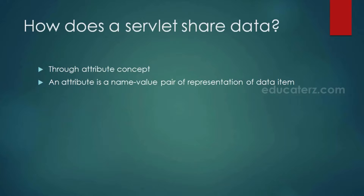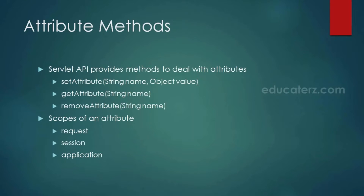An attribute is a name-value pair representation of a data item. The servlet API provides methods to deal with attributes: setAttribute is used to store a data item in a given scope; getAttribute retrieves the stored data item by name and returns null if no attribute exists; and removeAttribute is used to remove a data item. The scope of an attribute can be either request, session, or application.